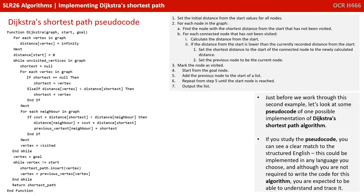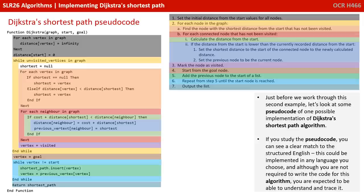Just before we work through the second example, let's look at some pseudocode for one possible implementation of Dijkstra's shortest path. If you pause the video and carefully study the pseudocode, you can see a clear match to the structured English. This could be implemented in any language you choose, and although you are not required to write the code for this algorithm, you are expected to be able to understand and trace it.